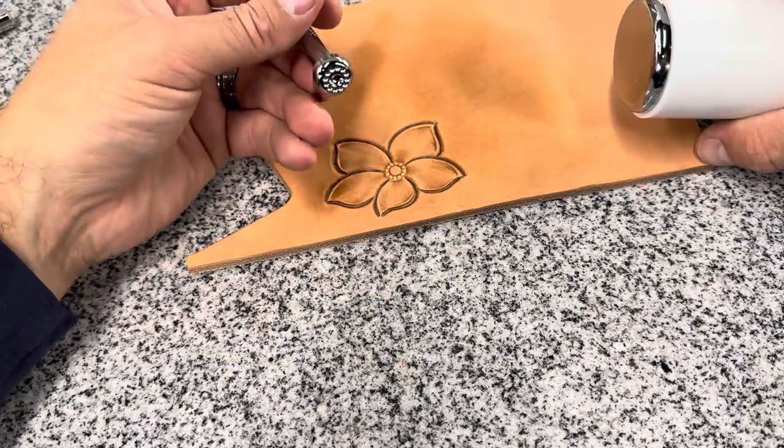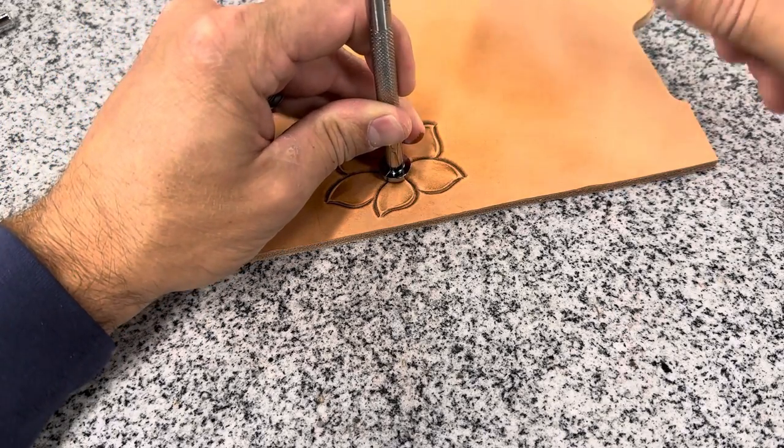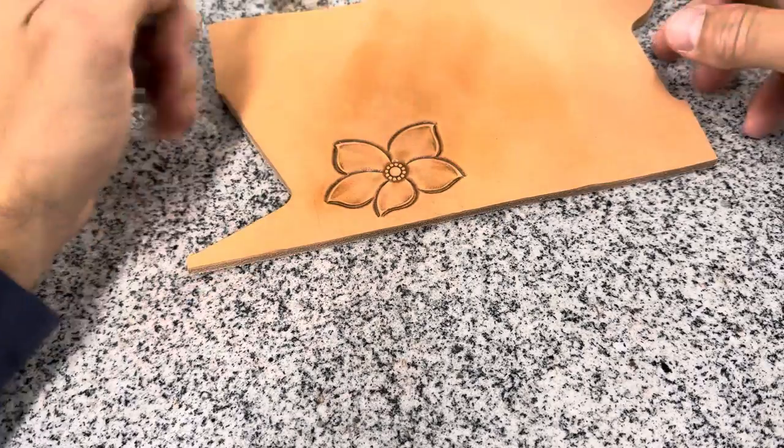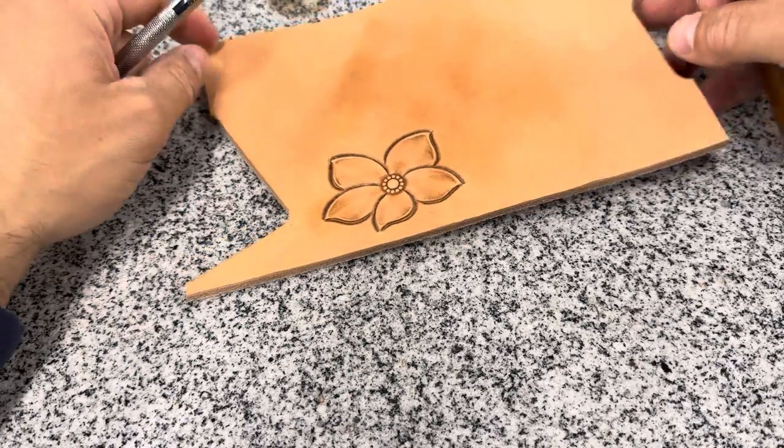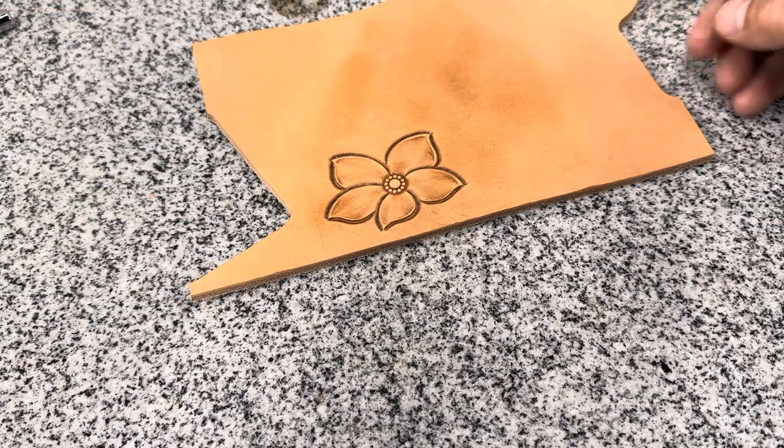Now my flower center, again I'm going back to that tool. Lining those seeds back up and now I'll hit it a little bit harder. It gets a little bit more depth in that flower center. All right.